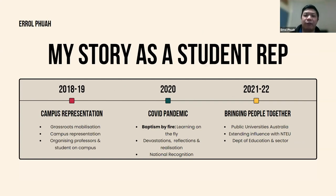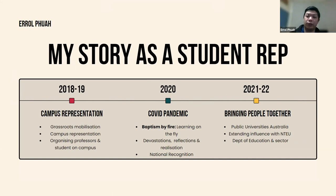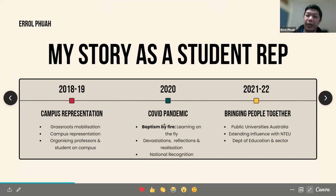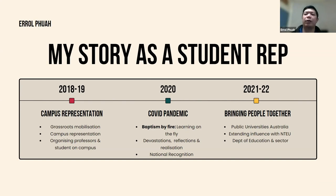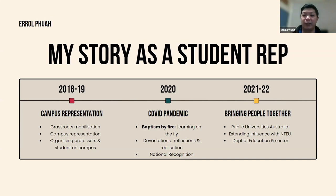My span of being a student rep has gone through three periods: 2018 up to 2022. First, my time on campus representation — a lot of things face-to-face, organizing things at my university pre-COVID. Then of course the COVID pandemic and the challenges that came with that. And then how to bring people together remotely when dealing at the national level, which is obviously very different when you're dealing with more people — very expensive to fly around. I'll go through how I went about influencing people, growing that influence, and getting people to do things that they believe in.